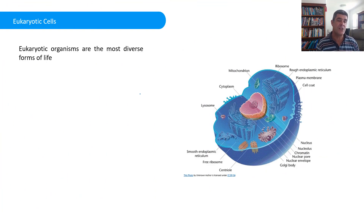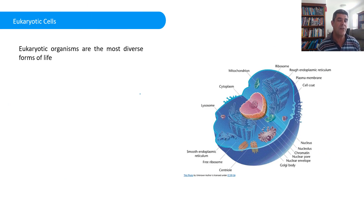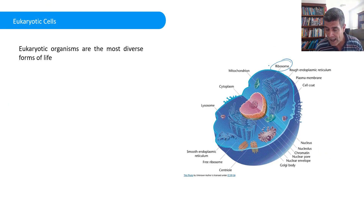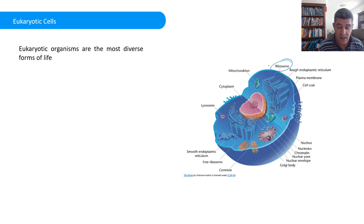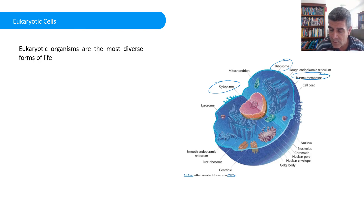If we briefly contrast this with a eukaryotic cell — these are the most diverse types of cells — you can see straight away there's a greater level of organisation. It still has things like ribosomes, it still has a plasma membrane around the outside, and it also has cytoplasm sitting within the cell. But in addition to these structures we looked at earlier, we also have a lot of other structures present as well.